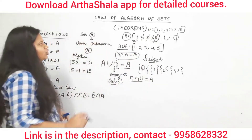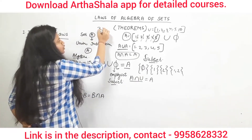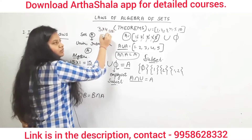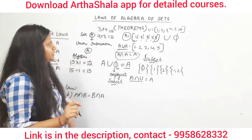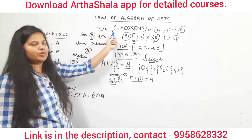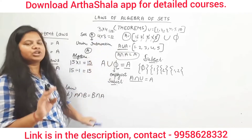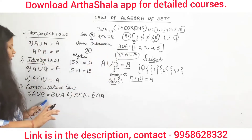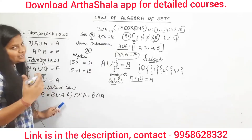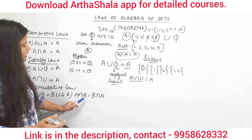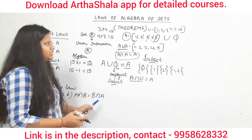Now let's understand the commutative law. The commutative law is the simplest to understand. In basic algebra: 3 × 4 = 12, and 4 × 3 = 12. The order does not matter. Similarly, A intersection B gives the same answer as B intersection A. Both A union B and B union A will produce the same result.